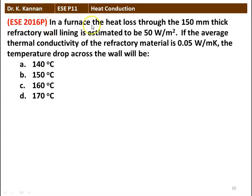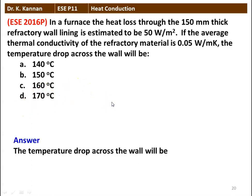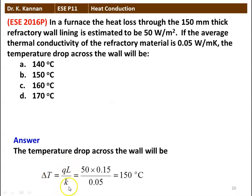Next question: in a furnace, the heat loss through a 150 millimeter thick refractory wall lining is estimated to be 50 watts per meter square. If the average thermal conductivity of the refractory material is 0.05 watts per meter Kelvin, the temperature drop across the wall will be: (A) 140°C, (B) 150°C, (C) 160°C, (D) 170°C. The answer: ΔT = Q·L / K = 50 × 0.15 / 0.05 = 150 degree Celsius. The answer is 150 degree Celsius.